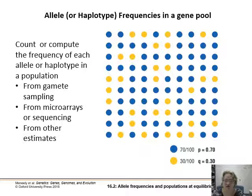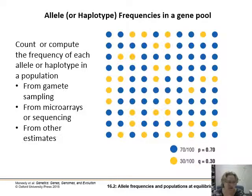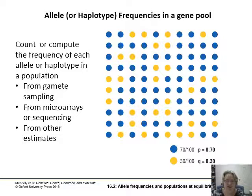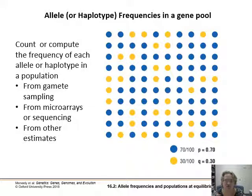You could do microarray analysis, you could sequence, or use other estimates to get a frequency of how many are in the gene pool. In this case we've got 70 out of 100 alleles are blue and 30 out of 100 are yellow. The blue are the dominant alleles going into p, and the yellows are the recessive alleles. We're mainly going to be working with recessive-dominant relationships here; we're not going to get into co-dominance or incomplete dominance.